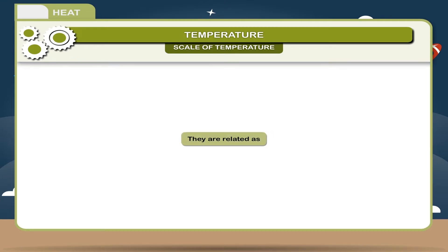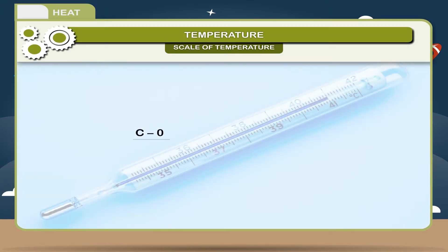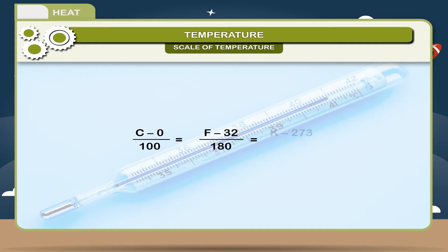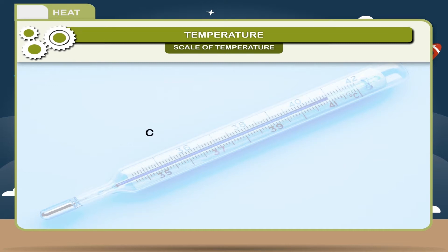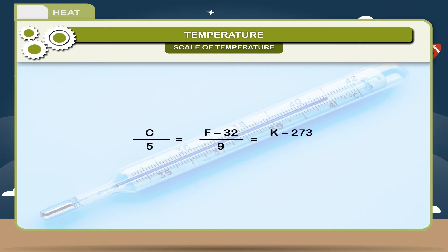Scale of temperature: the most commonly used temperature scales are the Celsius scale, Fahrenheit scale, and Kelvin scale. They are related as: (C - 0)/100 = (F - 32)/180 = (K - 273)/100, or C/5 = (F - 32)/9 = (K - 273)/5.